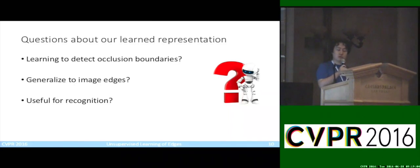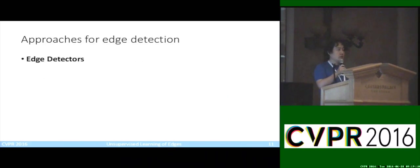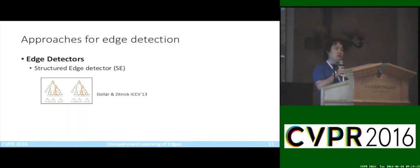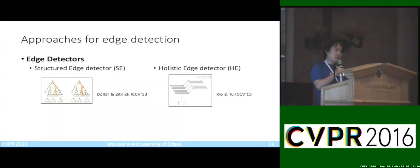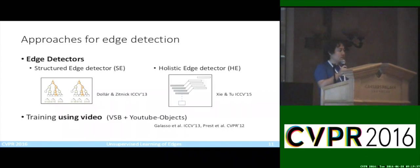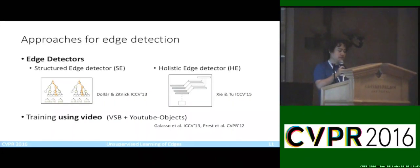I'm going to present a set of experiments to address these questions. We use the structured edge detector from Dollar and Zitnick, which uses a random forest to predict the edge patch. We also consider the holistic edge detector from Xie and Tu, which uses a fully convolutional neural network to generate the edge map — by far the holistic edge detector achieves the best performance on standard benchmarks. We train both detectors on a set of videos selected from a video segmentation benchmark and the YouTube object dataset.